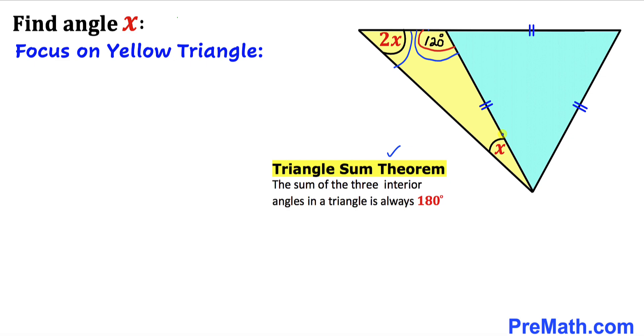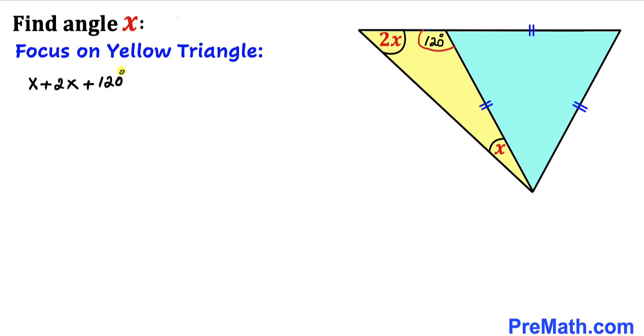So therefore let me go ahead and write down angle x plus angle 2x plus this angle 120 degrees is equal to 180 degrees. Combine the like terms so that is going to become 3x plus 120 degrees equals to 180 degrees.